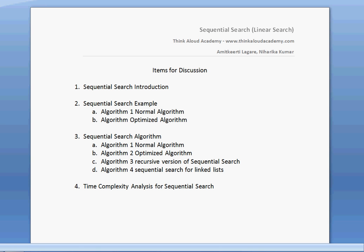Hi everyone, this is Amit Kirti. In this video I'll be talking about the sequential search algorithm. The items for discussion are: a sequential search introduction, two examples of sequential search, a normal algorithm and an optimized algorithm, four different algorithms for sequential search, and a time complexity analysis. Sequential search is probably one of the easiest ways of doing a search — a brute force approach. It is also called linear search because of the way it searches elements.